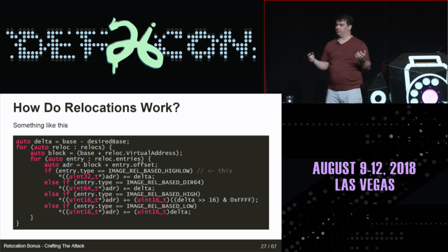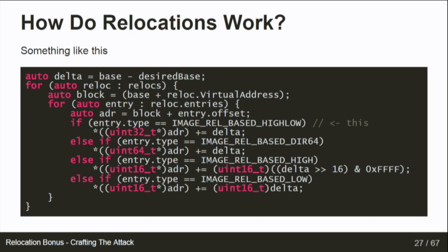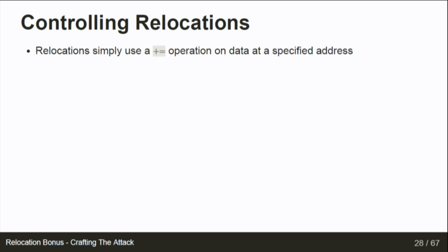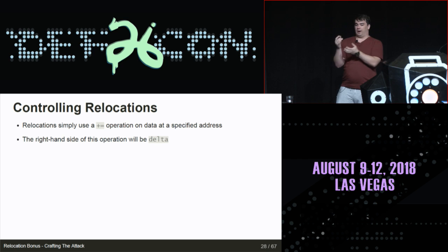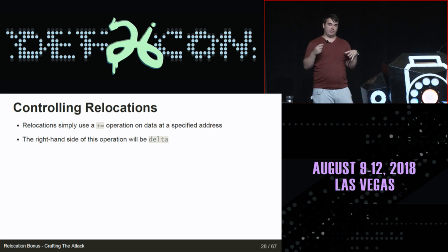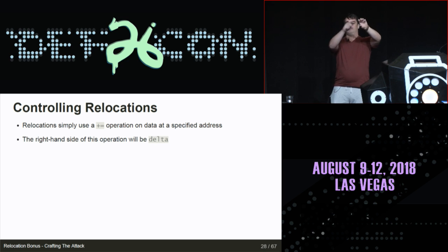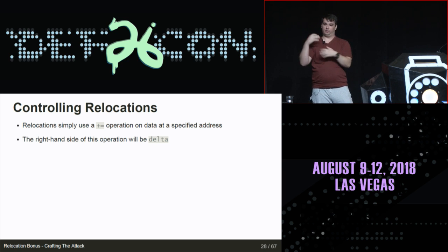This pseudocode describes how the loader does relocations. What we care about is the first line: Delta equals base — the base we're actually mapped at — minus desired base, the base we asked for in the PE header. The first if-statement inside the loop is the relocation type. A plus-equals operation is used and the right-hand side is Delta. So everything that is relocated gets its current value plus Delta, which is derived from the actual mapped address minus the desired address. That's how everything gets fixed up to point to the right place.